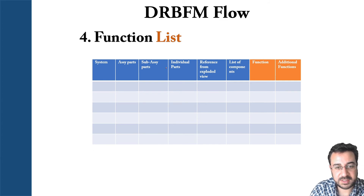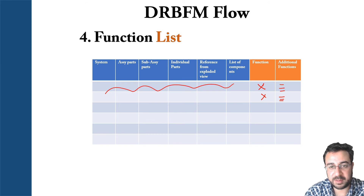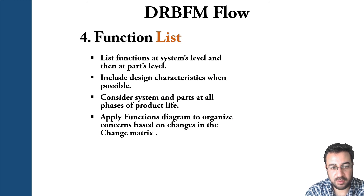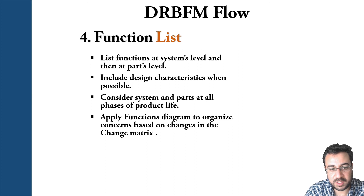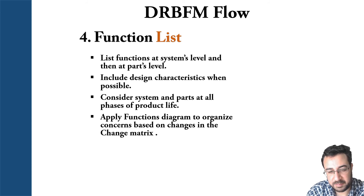Then you have the function list. You have system, assembly, and parts of assembly — copied from the previous sheets. Now you can state the function of each specific assembly and each specific part, listing any additional functions as well. This helps you understand exactly what each part is doing in the bigger picture of the assembly or system. The function list helps you list all functions at the system level and break them down to parts and components level, including design characteristics and considering all phases of the product life. Then apply the functions diagram to organize concerns based on changes in the change matrix.